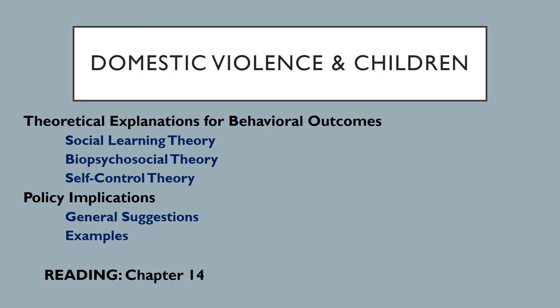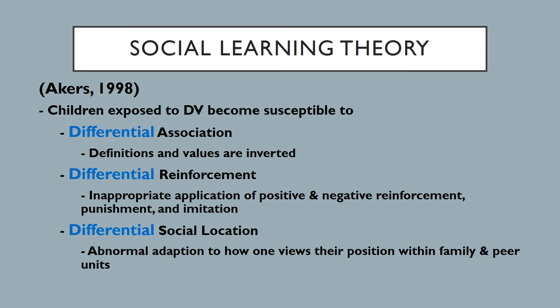The reading that goes along with this lecture will continue to be chapter 14 of your course textbook. When we look at social learning theories, at their core is the idea that deviant behavior is learned — antisocial behavior is learned, criminal behavior is learned. You may recall Edwin Sutherland's theory of differential association and other theories developed in the 1950s and 1960s.